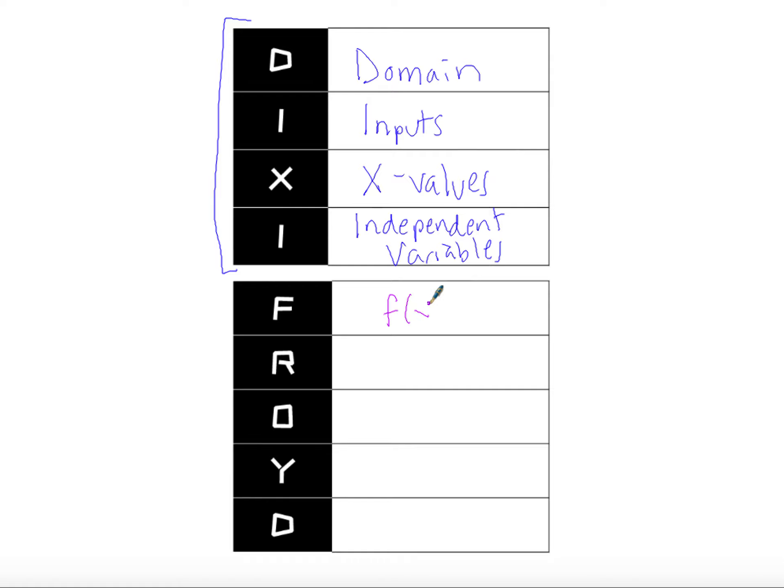Freud, the F stands for F of X. That is our output, our Y values, and our dependent variable.